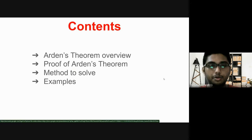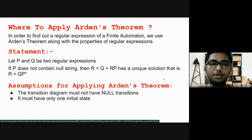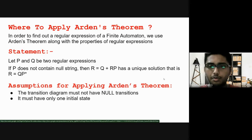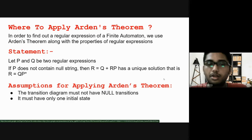Next, we will discuss the proof of Arden's theorem. Then, we will discuss some methods to solve examples to find out regular expressions from any finite automaton using Arden's theorem. And then, we have a lot of examples which will be discussed. So, first, the overview of Arden's theorem. In order to find out regular expressions of any finite automaton, we use Arden's theorem along with all the properties and identities of regular expressions.